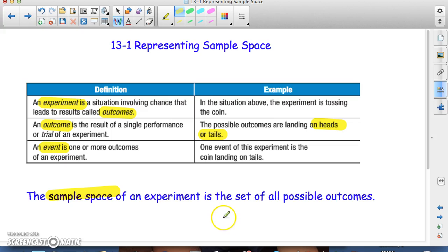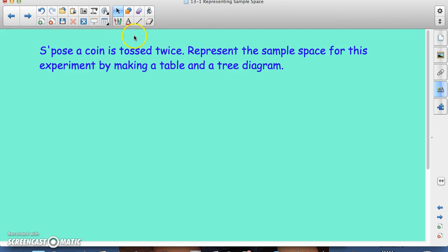So what can you get from the experiment? That is what we're going to talk about today. We're going to talk about different ways to represent those sample spaces. So suppose a coin is tossed twice. Represent the sample space for this experiment by making a table and a tree diagram. And I will show you how to do that.